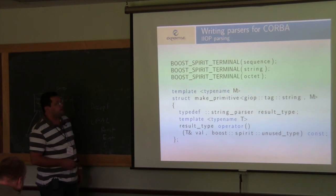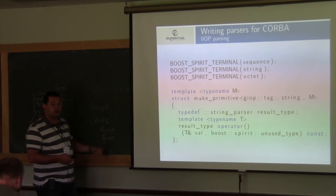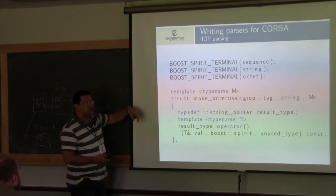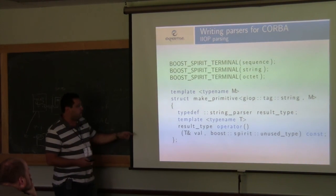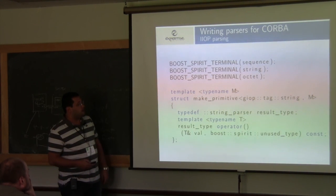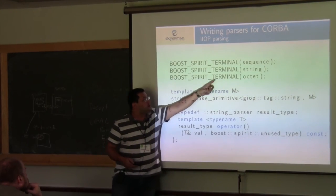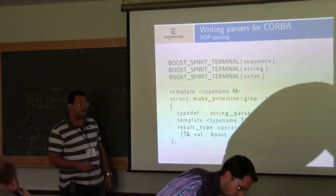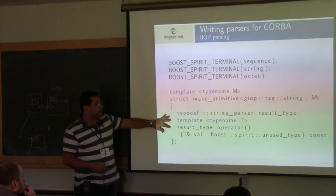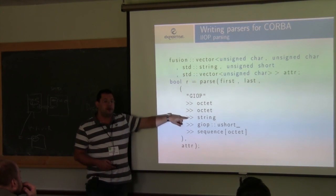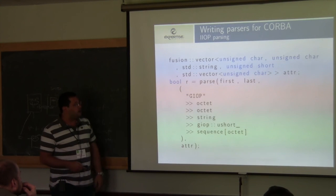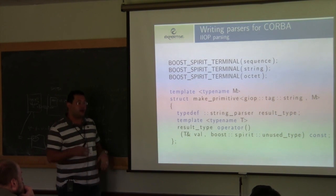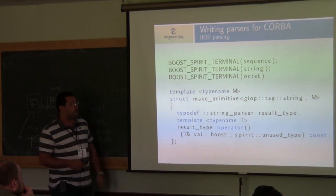We can create custom parsers for Boost Spirit. We specialize make_primitive inside Boost Spirit, specifying which kind of parser is going to be returned. This is the tag for the terminal — the Boost Spirit terminal defines the tag and creates the object used as a special grammar element. We return a string parser that does the actual work of extracting the string from the text being parsed. This is pretty straightforward and common in more advanced Boost Spirit grammars.